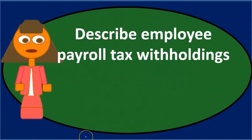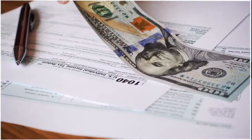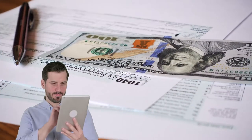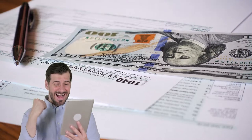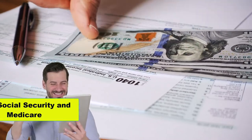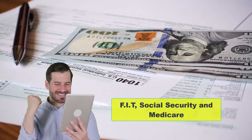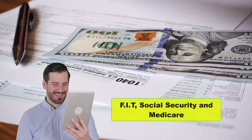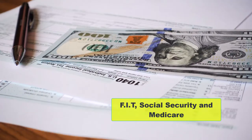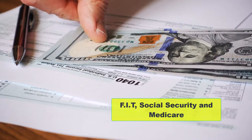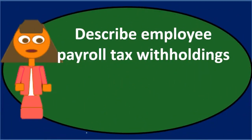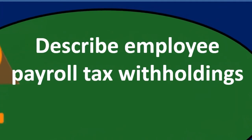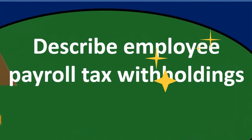The types of things that will be withheld are the federal taxes, which is typically what we focus on. These include FIT — federal income tax — social security, and medicare. Those are going to be the major withholdings we will have for federal taxes.